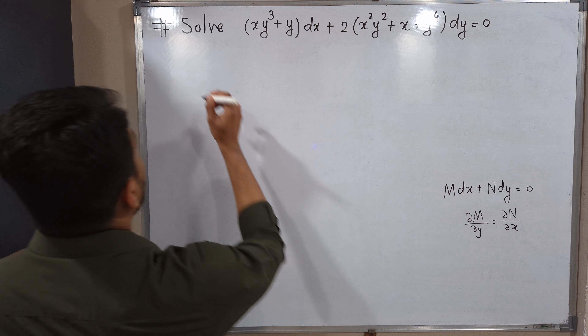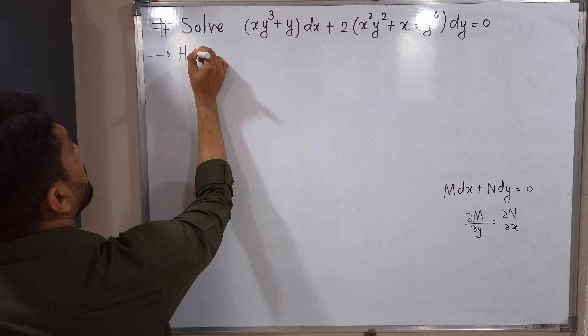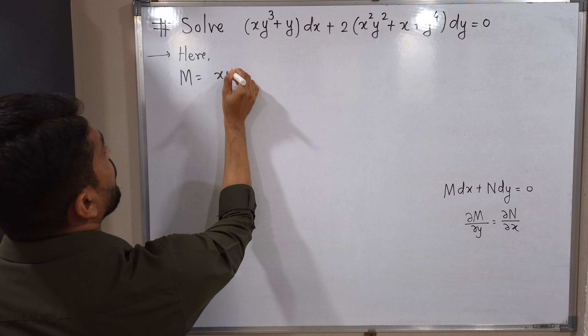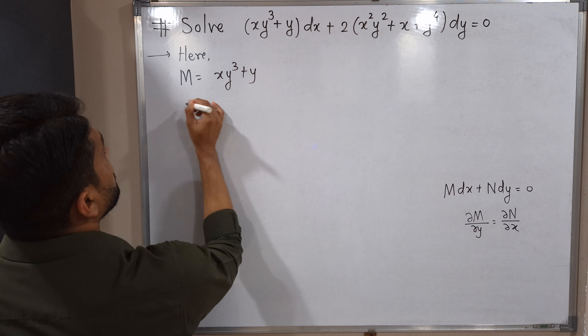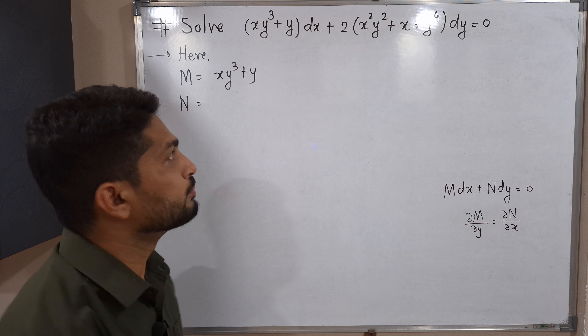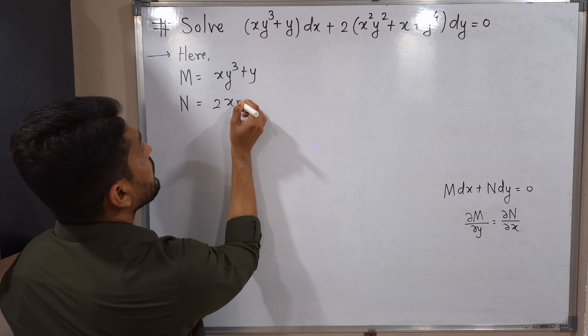First, let us check whether the given differential equation is exact or not. M is the multiple of dx, which is xy³ + y, and N is the multiple of dy. There is a 2 outside the bracket, so multiplying each term by 2 gives N = 2x²y² + 2x + 2y⁴. Now we find both partial derivatives to check if they are equal.